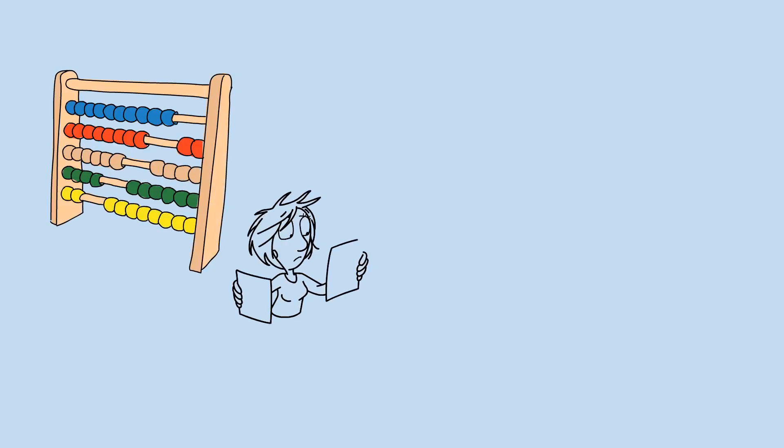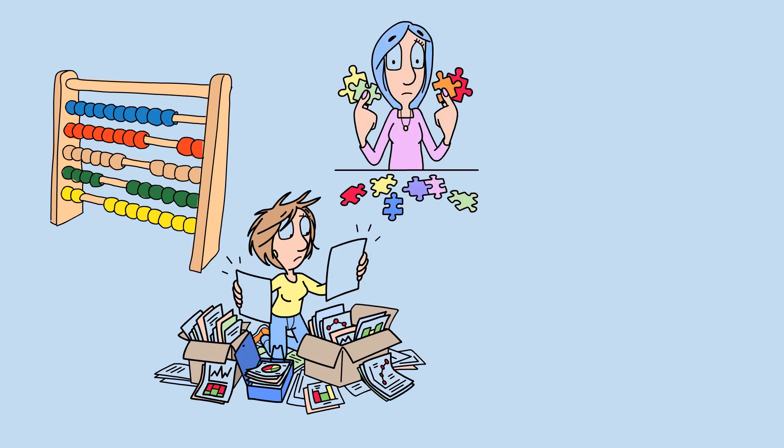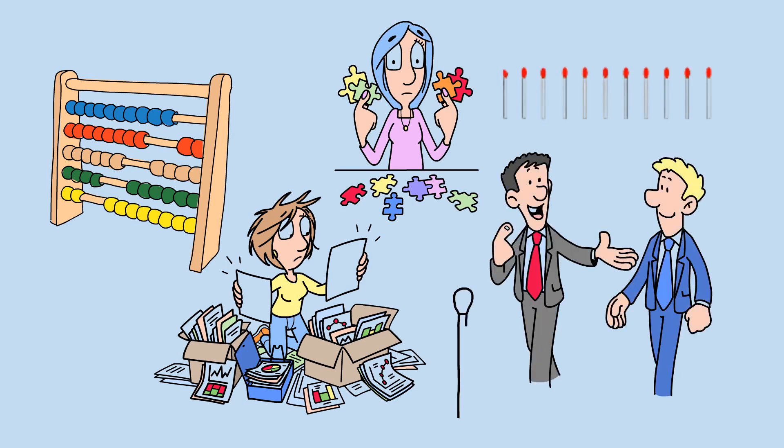The same mathematical principles that govern the counting game appear in many other contexts, often with subtle variations that reveal deeper truths about strategic thinking. Consider this classic puzzle: 11 matchsticks lie on a table. Two players take turns removing 1, 2, or 3 matchsticks. The player who takes the last matchstick loses.